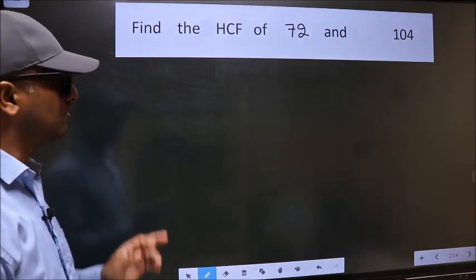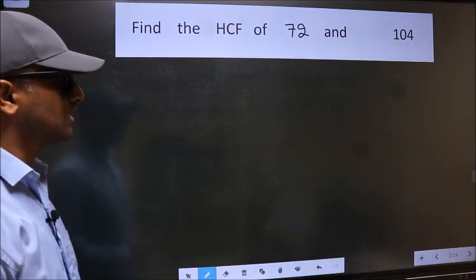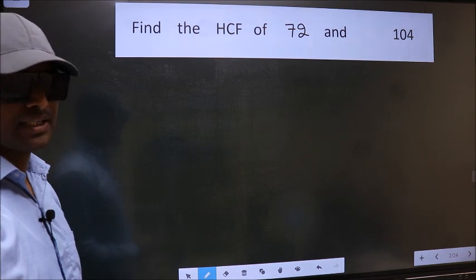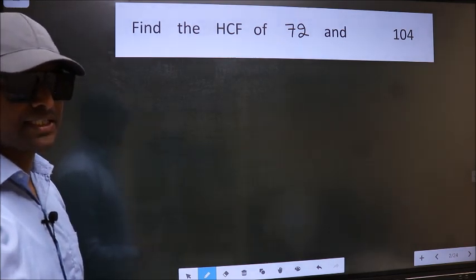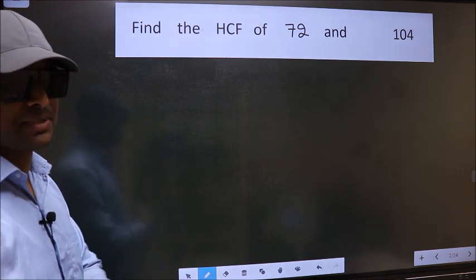Find the HCF of 72 and 104. To find the HCF, we should do the prime factorization of each number separately.